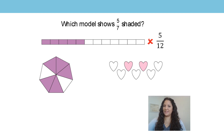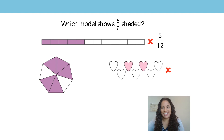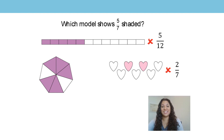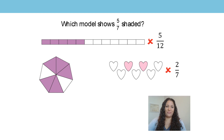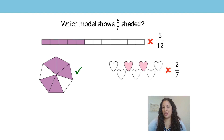Now let's have a look at the hearts. Do the hearts show 5 sevenths shaded in? Well, they don't either. The whole has been divided into 7 equal parts because there are 7 hearts. Only 2 of the hearts are shaded. That means 2 sevenths of the hearts are shaded and 5 sevenths are not shaded. Now let's look at this model here — this is a heptagon, a 7-sided shape. The heptagon has been divided into 7 equal parts and 5 of them have been shaded in. So the heptagon is showing 5 sevenths. It doesn't matter which of the 5 equal parts are shaded in as long as there are 5 equal parts shaded in.